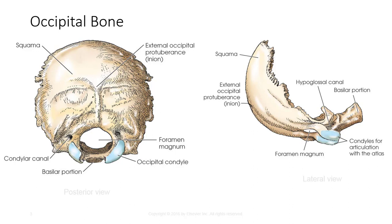The occipital bone articulates with the two parietals, the two temporals, the sphenoid, and the atlas, or C1.